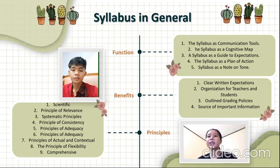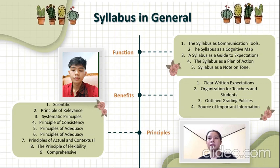The fifth is the principle of adequacy. This principle provides direction that the coverage of indicators, subject matter, learning experience, learning resources, and assessment system is sufficient to support the achievement of basic competencies.